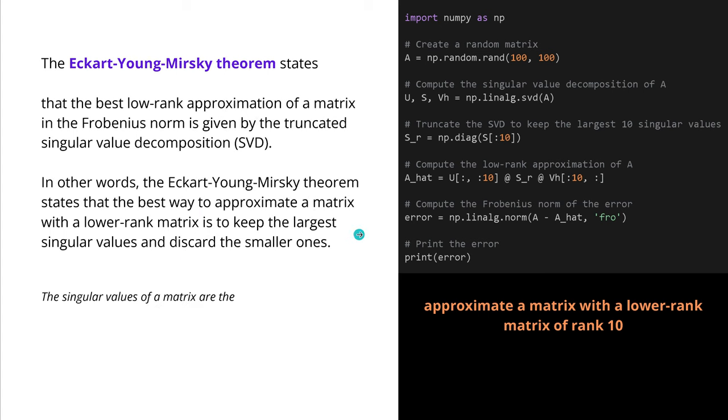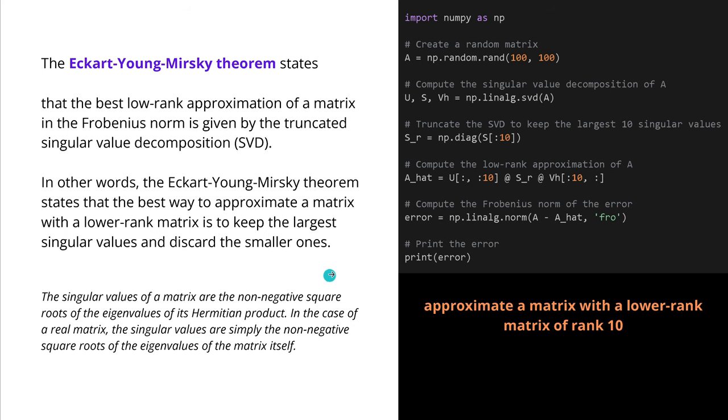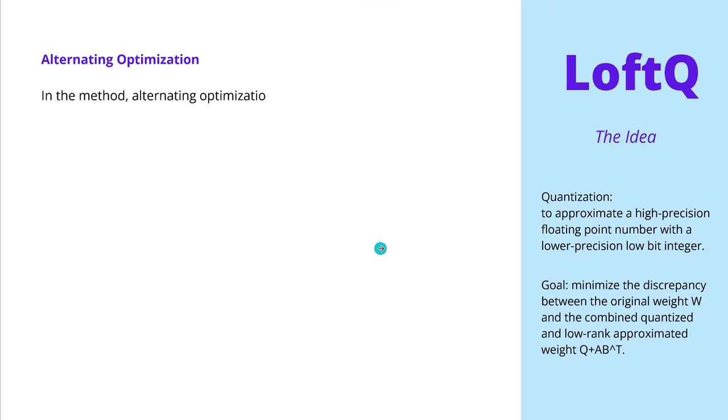If you think, hey, what about, what are singular values of a matrix? The non-negative square roots of the eigenvalues of the Hermitian product. And if you have a real matrix, like we have, the singular values are simply the non-negative square roots of the eigenvalues of the matrix itself. It helps to know a tiny little bit of mathematics.